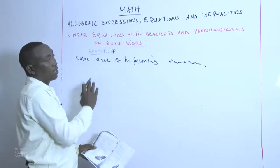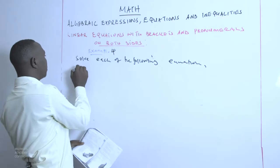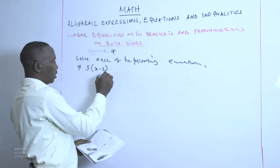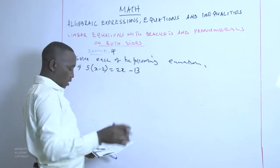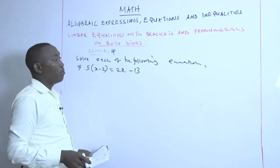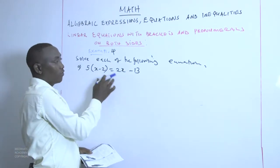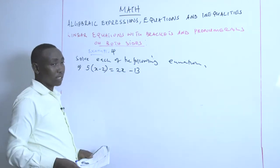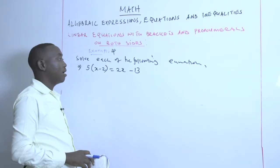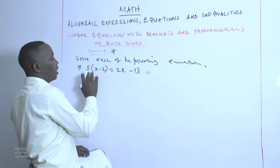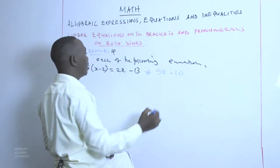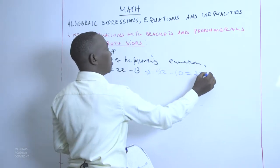Example 4, part 1: 5 into (X minus 2) equals 2X subtract 13. This equation has pronumerals on both sides. We expand the brackets first: 5 multiplied by X gives 5X, subtract 5 multiplied by 2 gives negative 10, equals 2X minus 13.